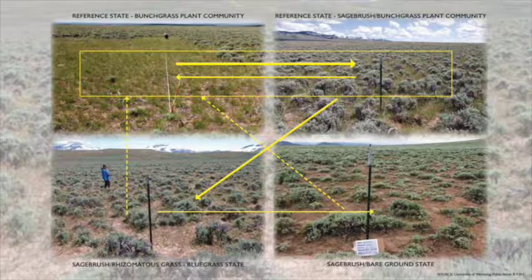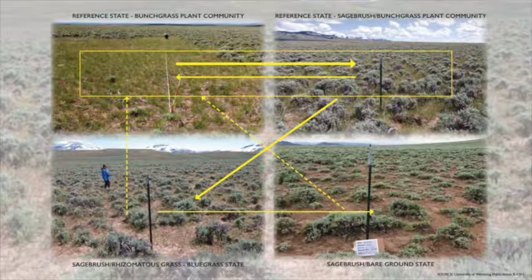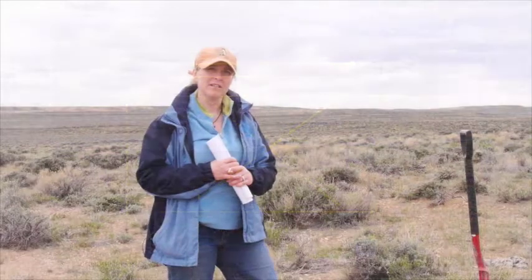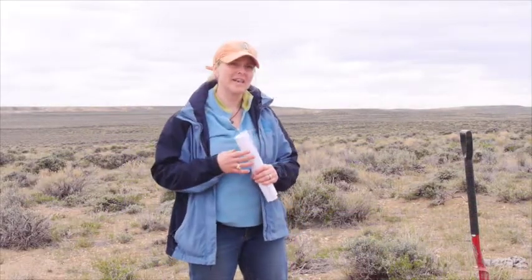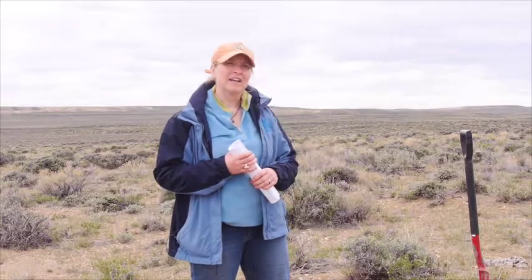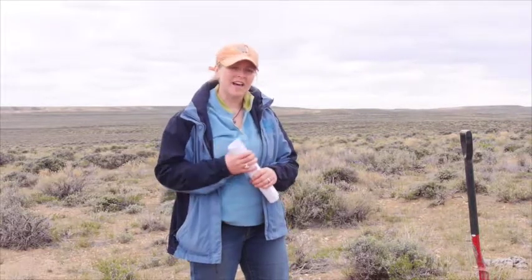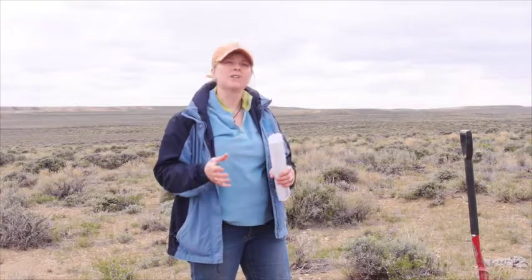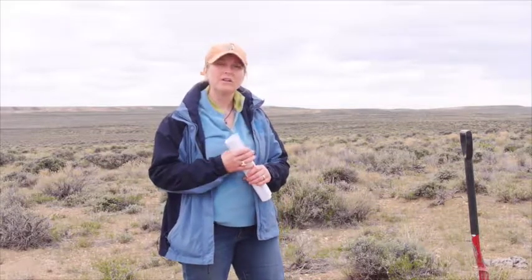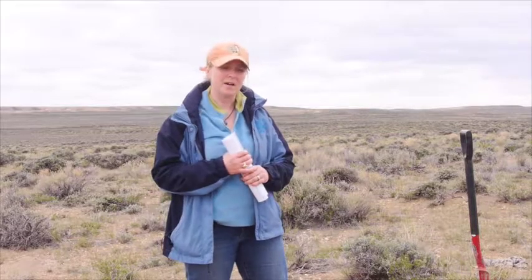If your desired plant community is achievable from your current plant community, that's when the prescriptive part of the ecological site description really comes in. It should be a repository of information about the site that tells you the steps, actions, and management that need to occur to reach that desired plant community.